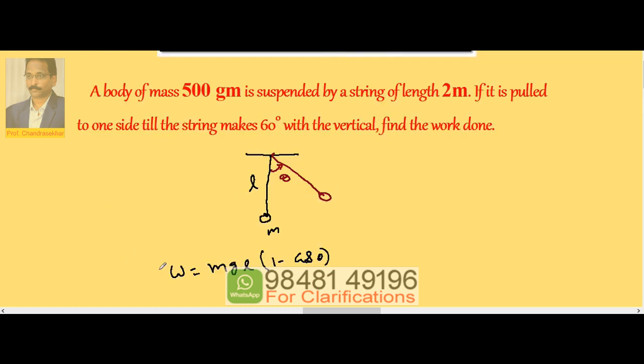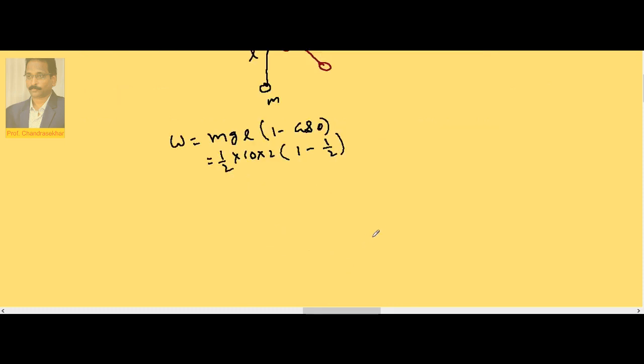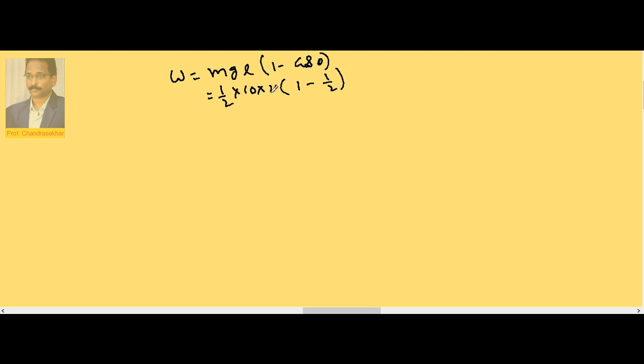Here mass is given as 500 grams, half kg, g is 10, length is 2 meters, cos 60 is half. So with simplification, this 2 and 1/2 gets cancelled, remaining 10 into 1/2, so 5 joules.